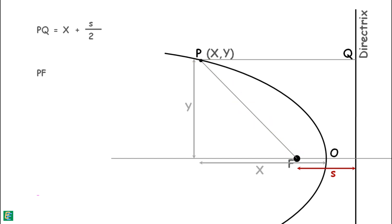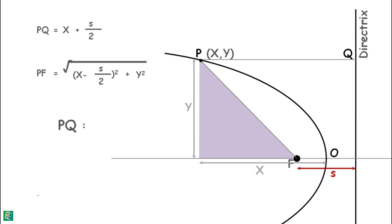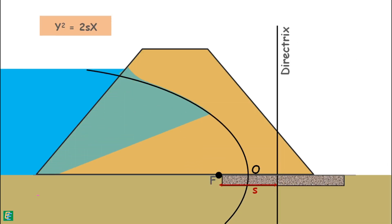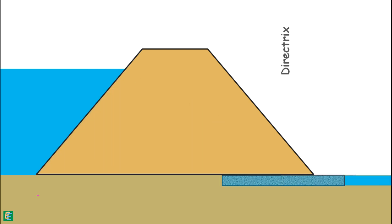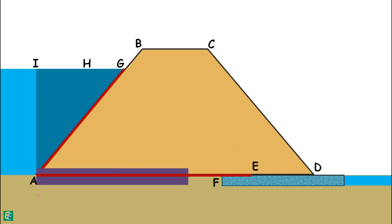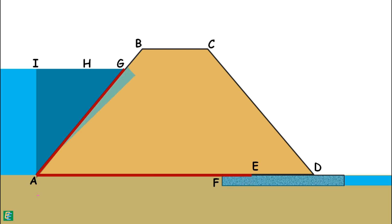The distance PQ from P to the directrix equals x plus s/2. The distance PF from P to the focus is given by the Pythagorean theorem as the square root of (x minus s/2) squared plus y squared. Setting PQ equal to PF and solving yields a simpler equation for the parabolic curve. If we assume the seepage line is this parabola, this becomes the equation of the seepage line. The focus of the seepage parabola is defined as the point where the bottom flow line meets the last equipotential line.